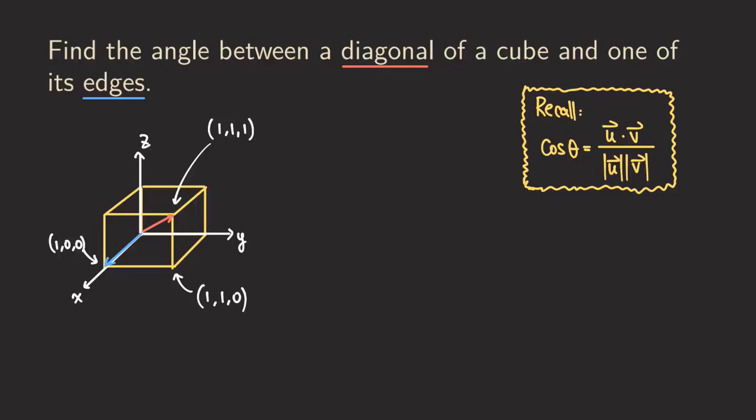So now what happens is that we actually need to write out those two vectors. What is the vector that is representing the diagonal? So this V right here is actually starting from the origin to this point, one, one, one. So we actually just get one, one, and one, because it's a position vector. It starts at the origin.